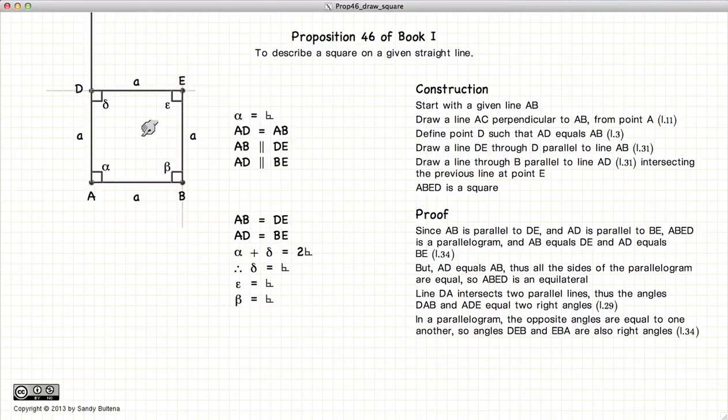So we have a parallelogram where all four sides are equal, and all of the angles on the inside are right angles. That, by definition, is a square. And thus we have shown how to draw a square from a given line segment AB.